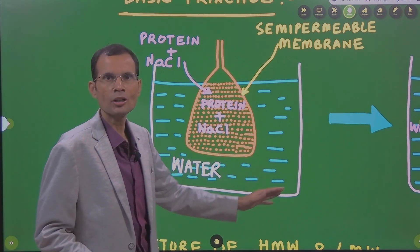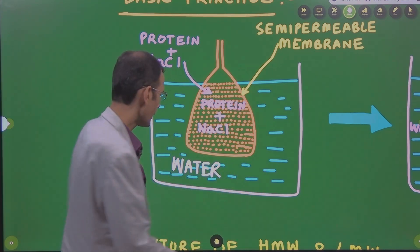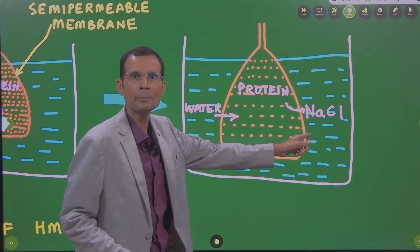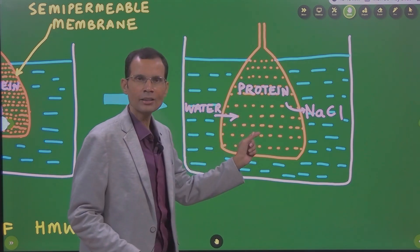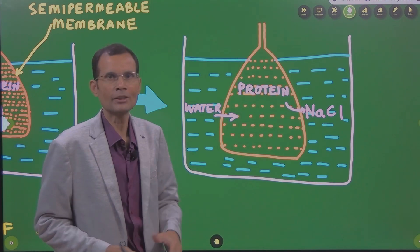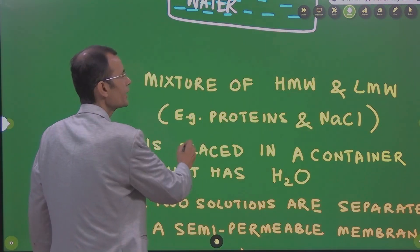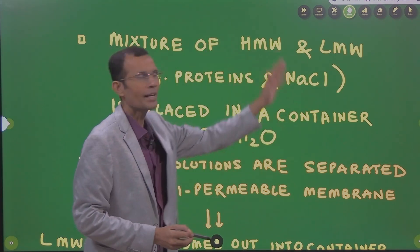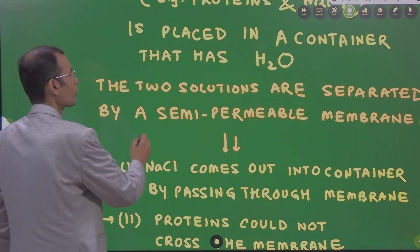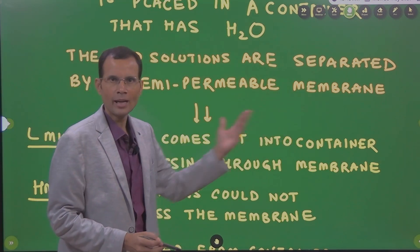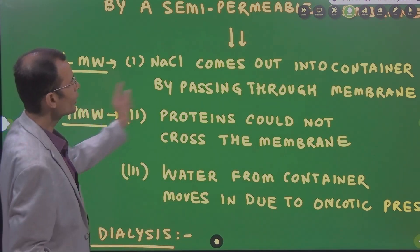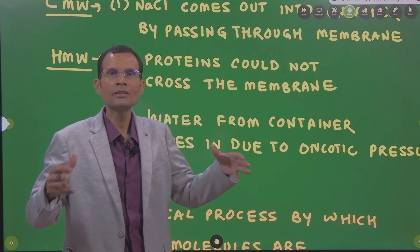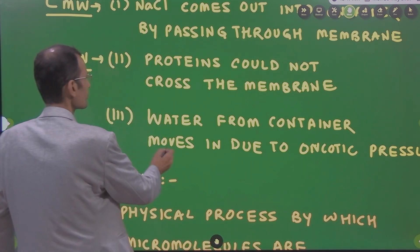This means we have separated these two types of substances by immersing them in this container and separating them by a semi-permeable membrane. Diffusion of only one type of substance has occurred, and thereby the two substances in the bag could be separated. The sodium chloride will come out because it can cross this semi-permeable membrane. Proteins could not, and water will enter the bag because proteins exert oncotic pressure. That's the basic principle underlying dialysis — a mixture of high molecular weight and low molecular weight substances like proteins and sodium chloride respectively.